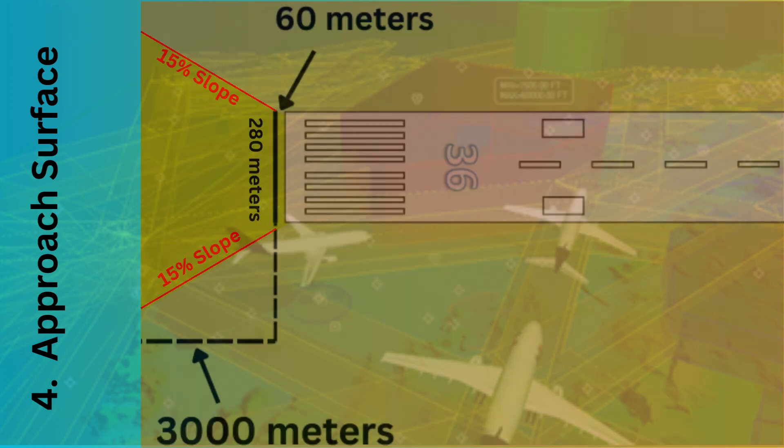Zooming in further, the distance between the runway threshold and the start of the approach surface is 60 meters, since that part is counted as the runway strip. The innermost edge of the approach surface has a length of 280 meters with a divergence of 15 percent slope on both sides.